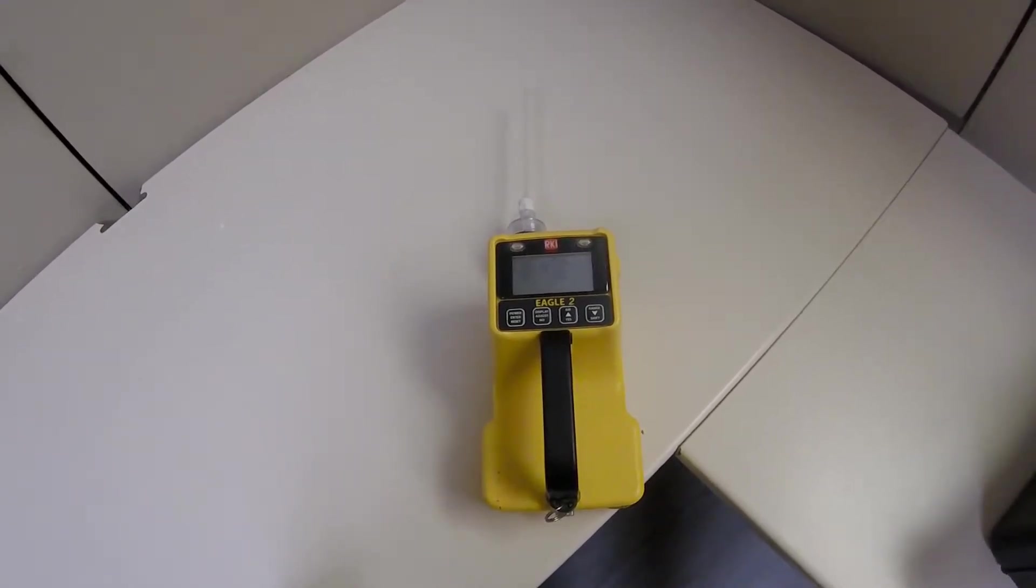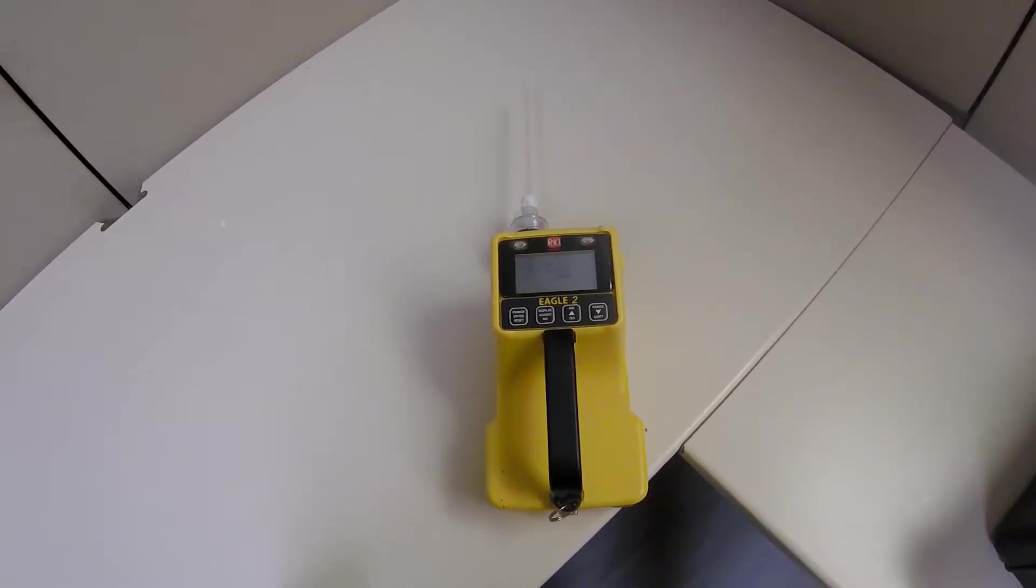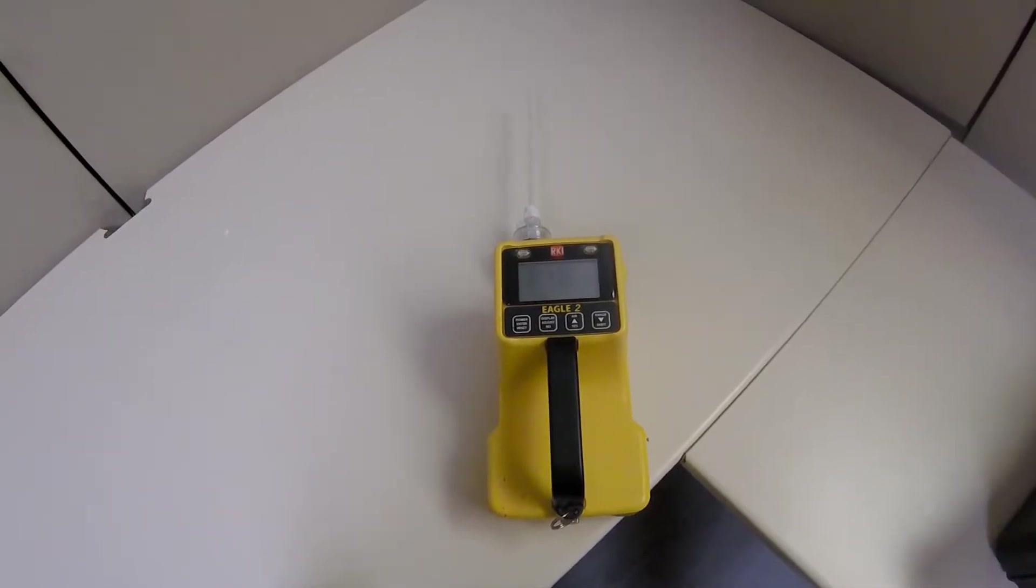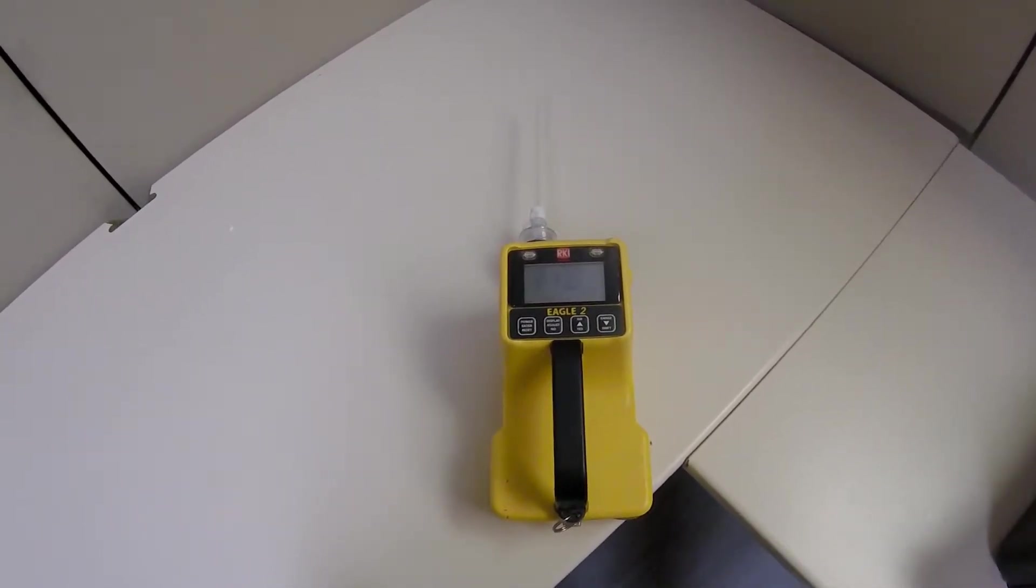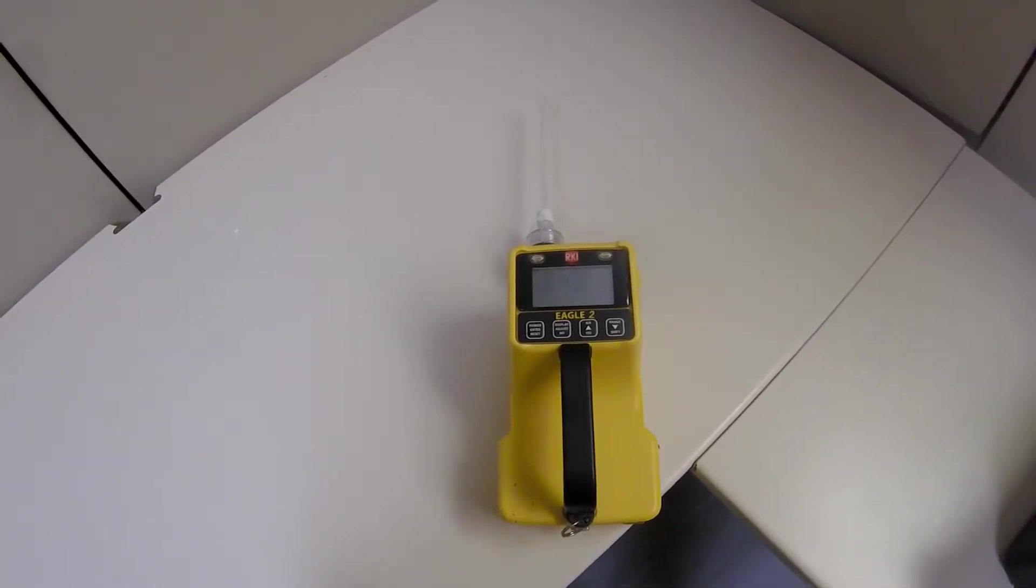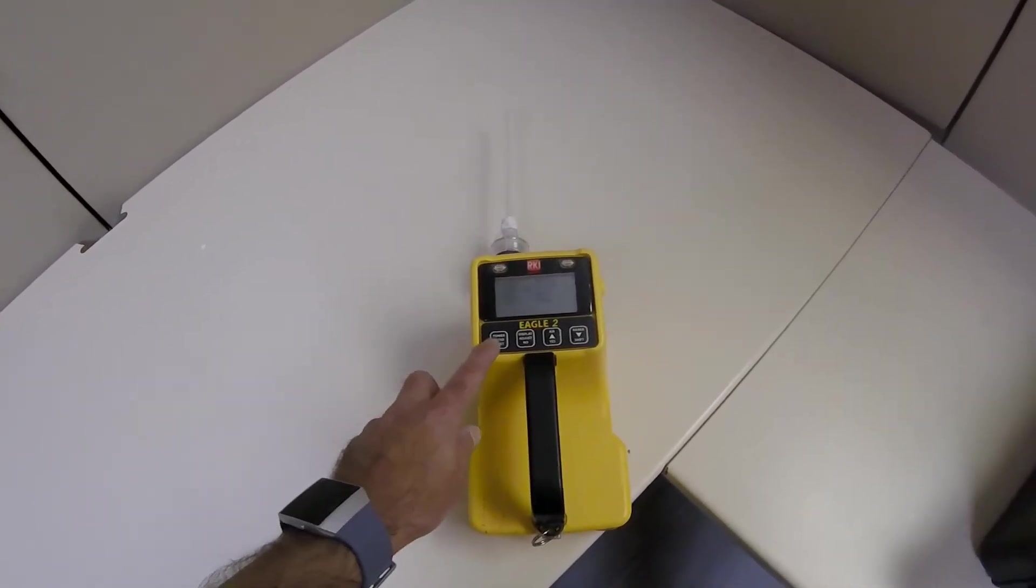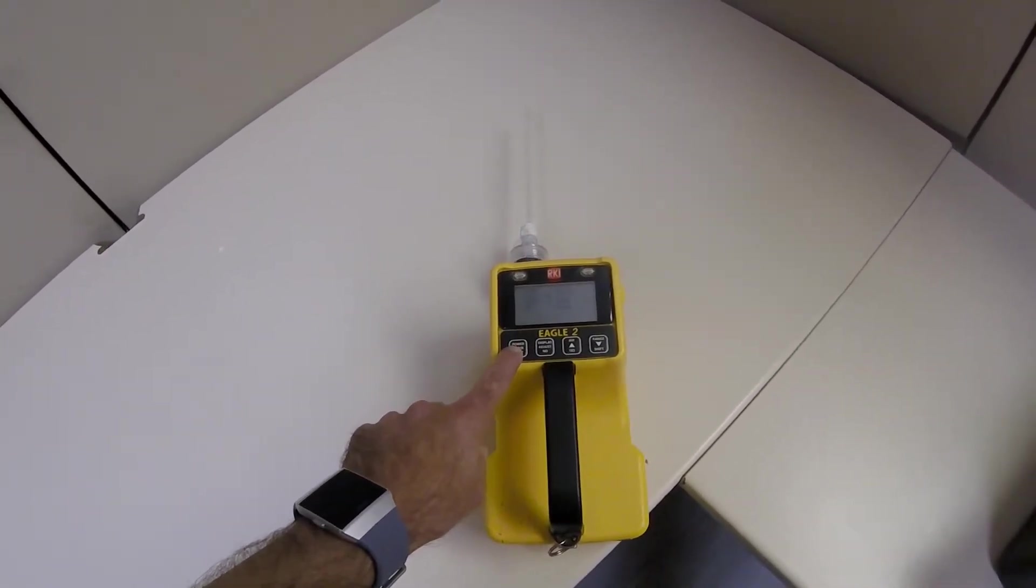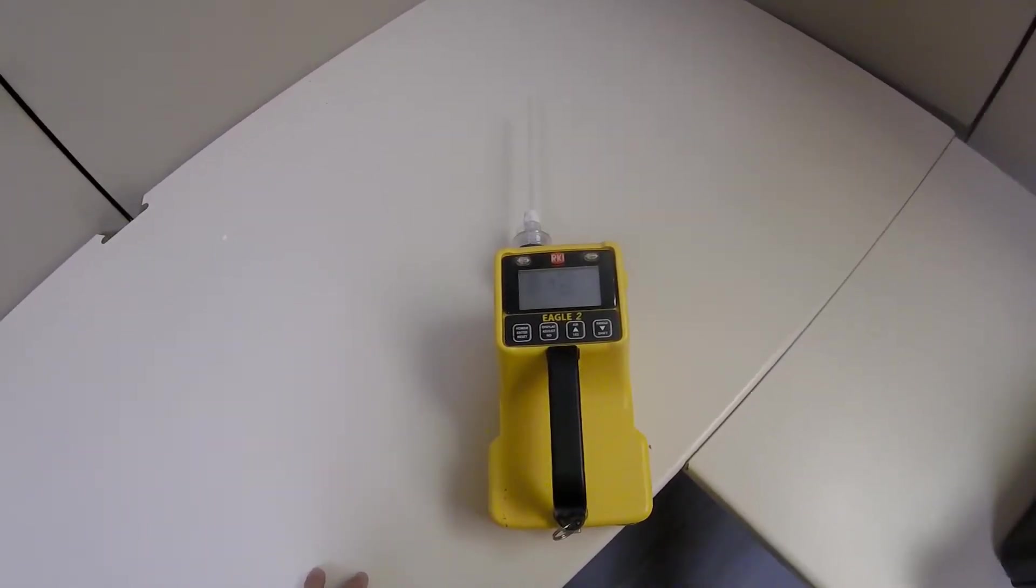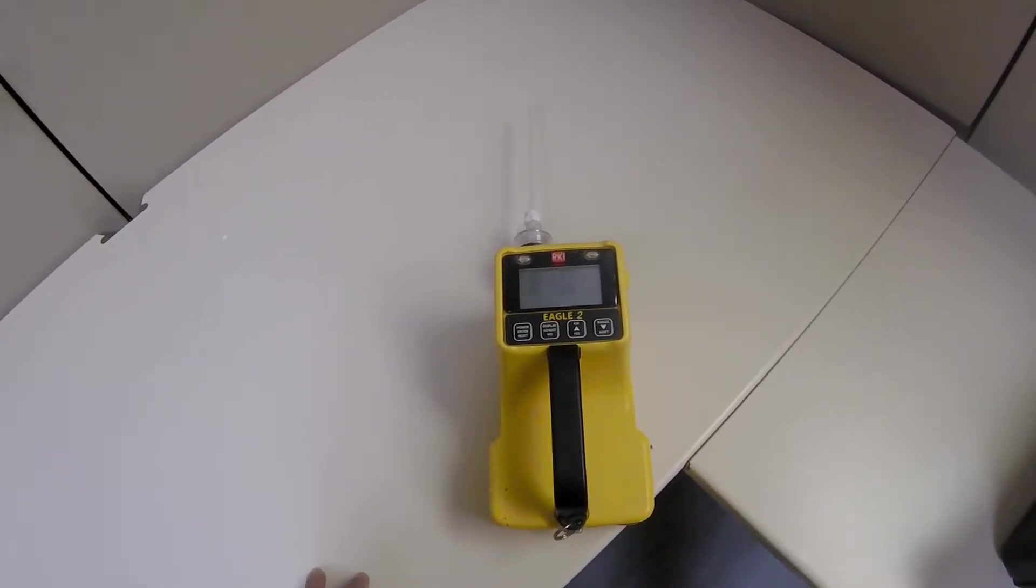But first, let's review the possible failed sensor. If the Eagle II experiences a sensor failure during startup, a screen indication of which sensor failed will appear and the buzzer sounds a pulsating tone twice per second. The Eagle II can still be used for the remaining gases that have a good sensor. To continue, press and release the power enter reset button to acknowledge the failure. The gas reading for that sensor will be replaced by three X's. It is a good idea to replace the failed sensor and have a calibration performed as soon as possible.